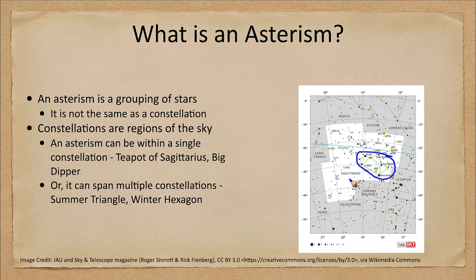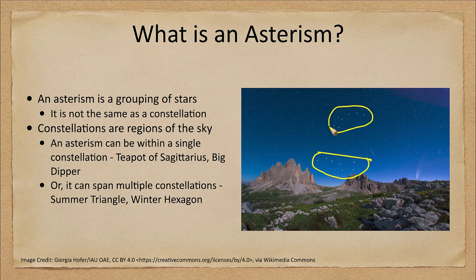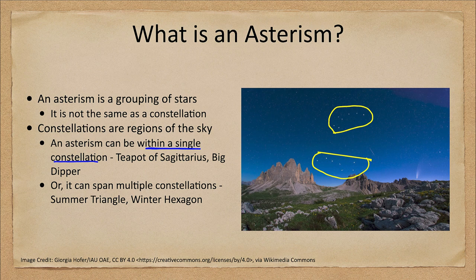There are 88 constellations that make up the entire sky. An asterism is just a portion of a constellation, or it can actually span multiple constellations. Another example would be what is called the Big Dipper. Here we see the Big Dipper and the seven bright stars that make it up, and we also see the Little Dipper as well. These are two other asterisms located within a single constellation. The teapot is completely within Sagittarius, the Big Dipper is completely within Ursa Major, and the Little Dipper within Ursa Minor — they are each part of a constellation.